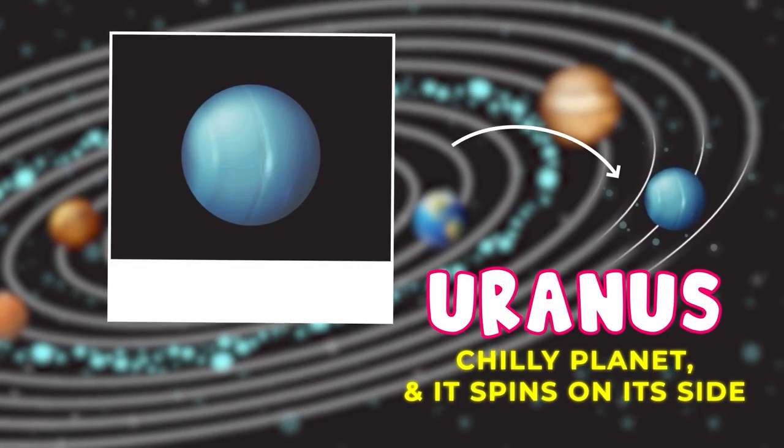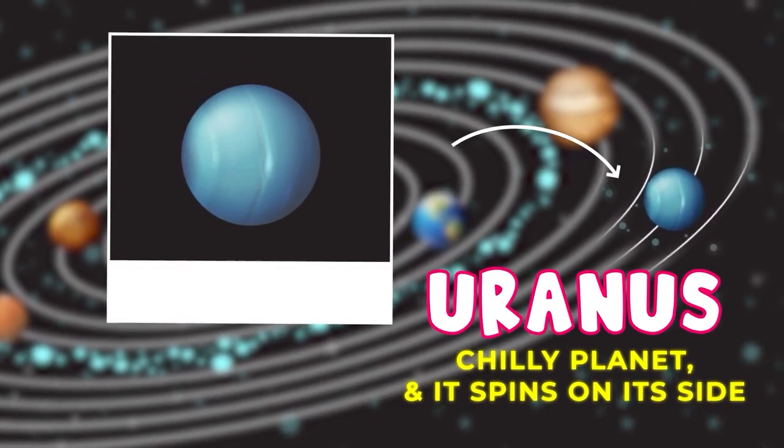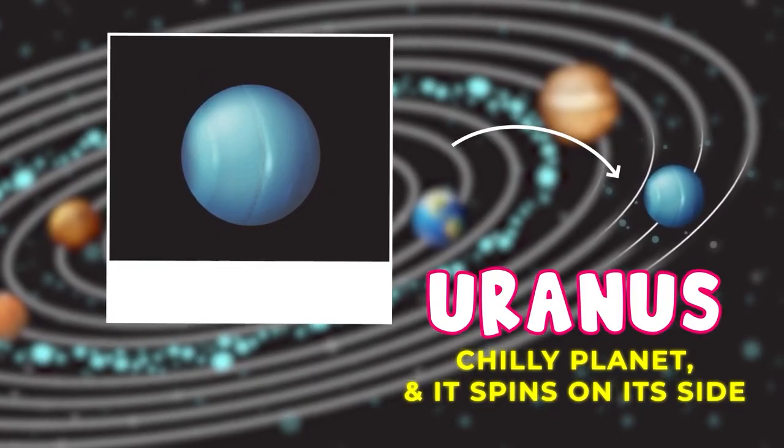Uranus is a chilly planet, and it spins on its side. It's different from all the other planets because of this unique tilt.